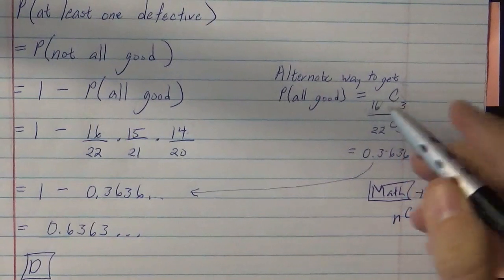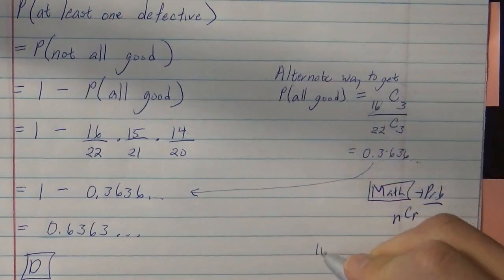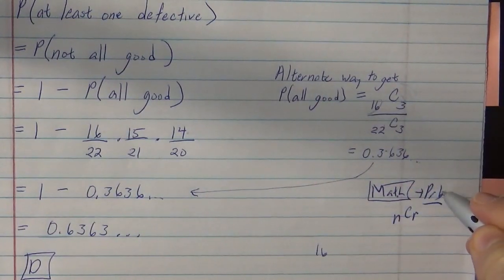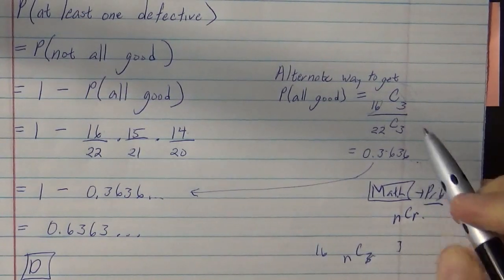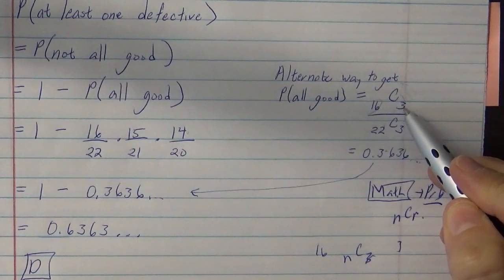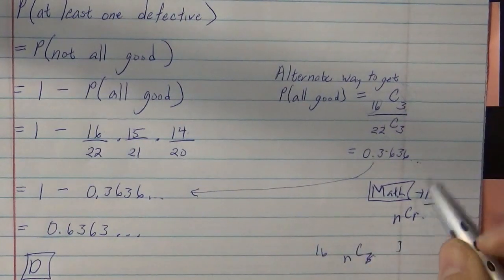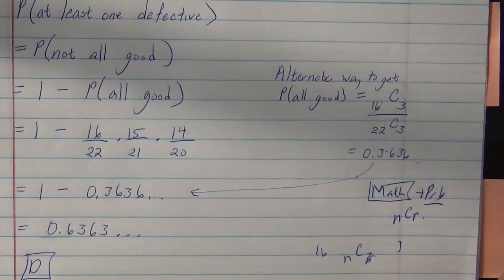You'll have to hit the 16 first, so you'll do the 16 first, then you'll hit the math, then you'll go to probability, then NCR, then hit the NCR, and then you'll hit the, in this case, 3 to finish it, and then enter, and it'll give you a number.